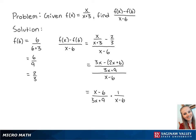Now that we have an x minus 6 on the top and the bottom, these will both cancel out so that we are left with 1 over 3x plus 9. And this is the final answer.